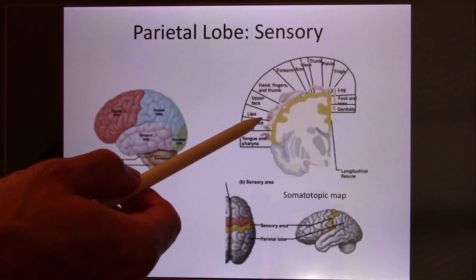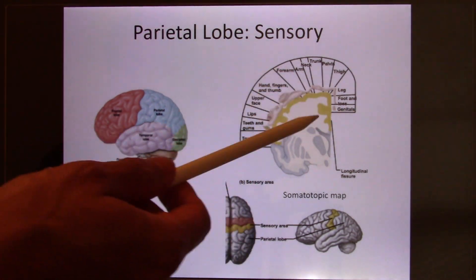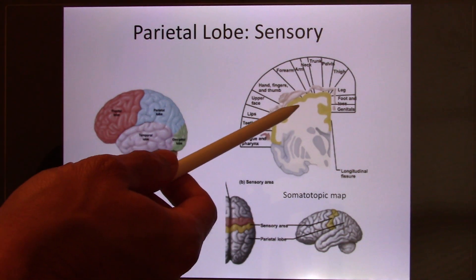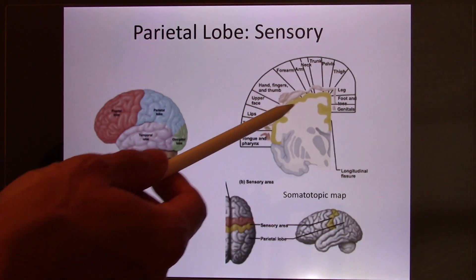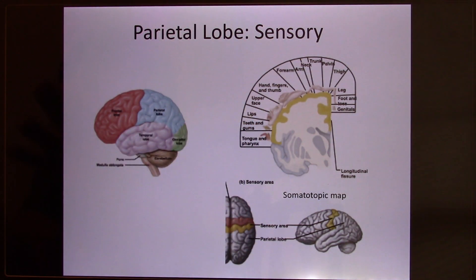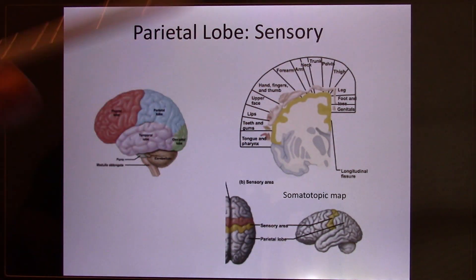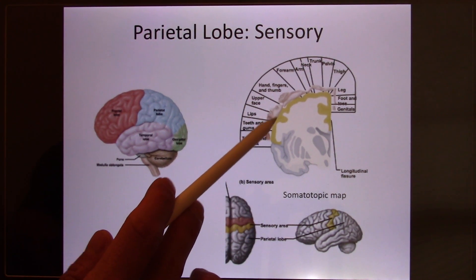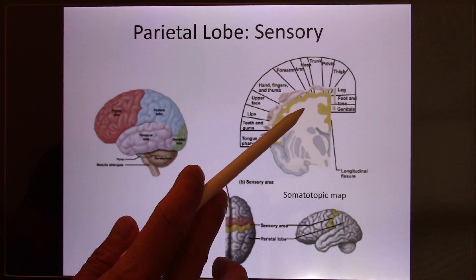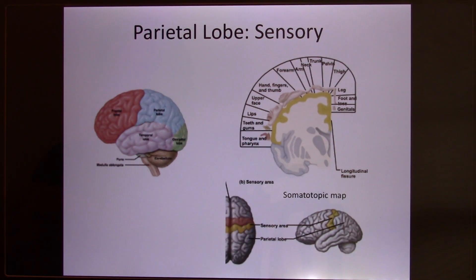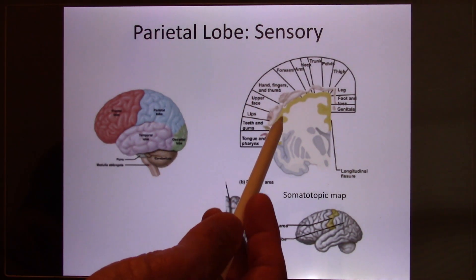When you look at the somatosensory cortex, you find a whole body map. If I touch your face, this neuron fires and you feel your face being touched. If I shake your hand, this neuron fires and you feel your hand being touched. The map represents different body parts from your face to your leg. But when you look at the size, you find a lot of neurons analyze information from your face and your hand, while not too many neurons analyze information from your body. This tells you your brain really, really prefers your face and your hand.